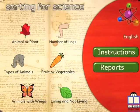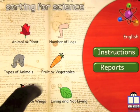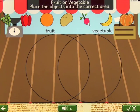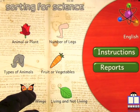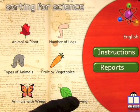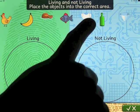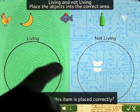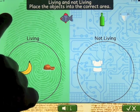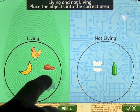Type of Animals has categories: pet, farm, wild, flying, and sea creature. Fruit or Vegetables has items considered both fruit and veg for that section. Animals with Wings sorts into wings and no wings. Living and Not Living is a very interesting category — pigeon correct, banana correct, chicken well done, fish correct, bottle correct, clay correct.